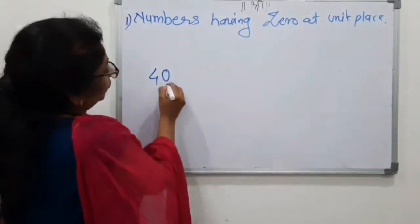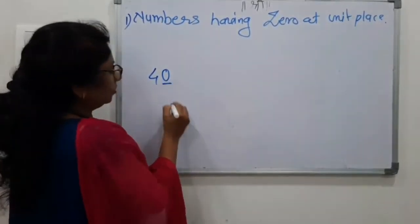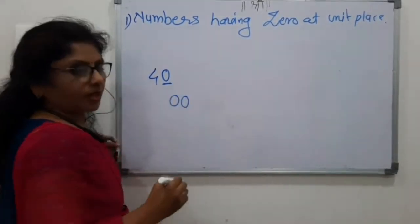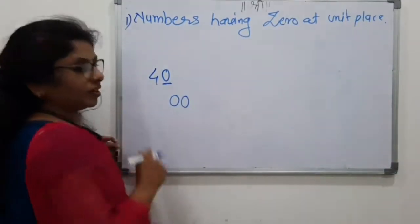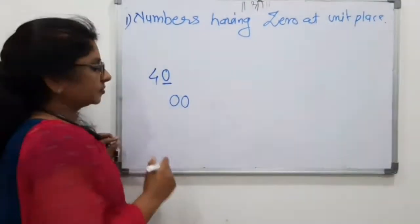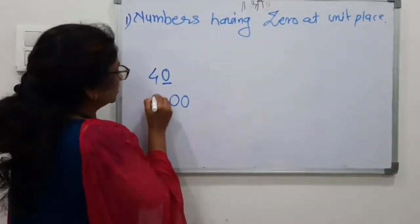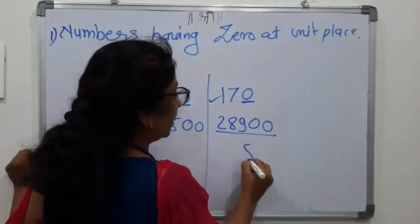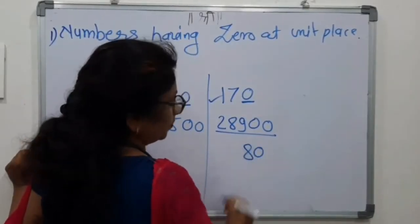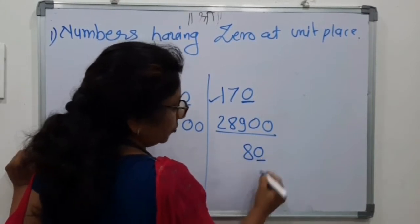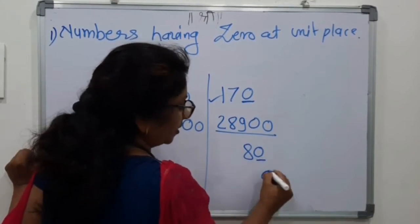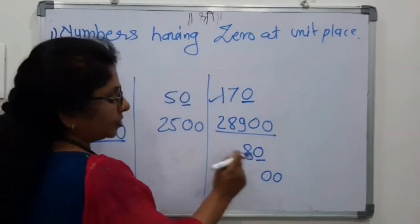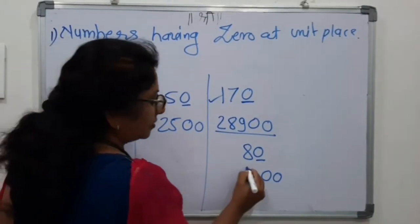For the square of 40, write down two zeros and the square of 4 is 16. For the square of 80, write down two zeros and the square of 8 is 64.